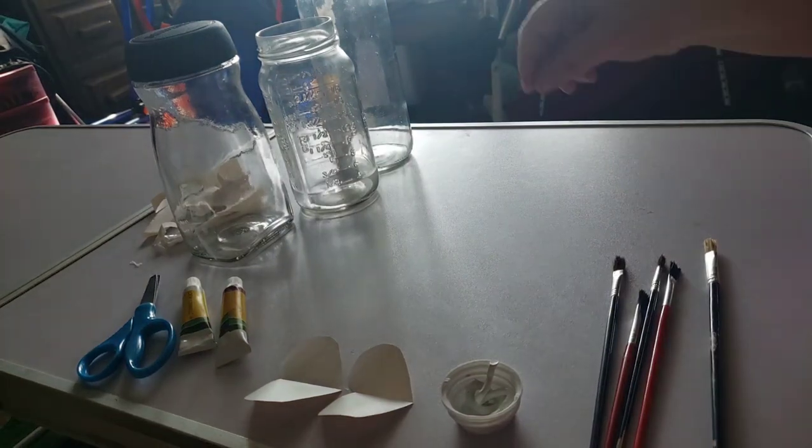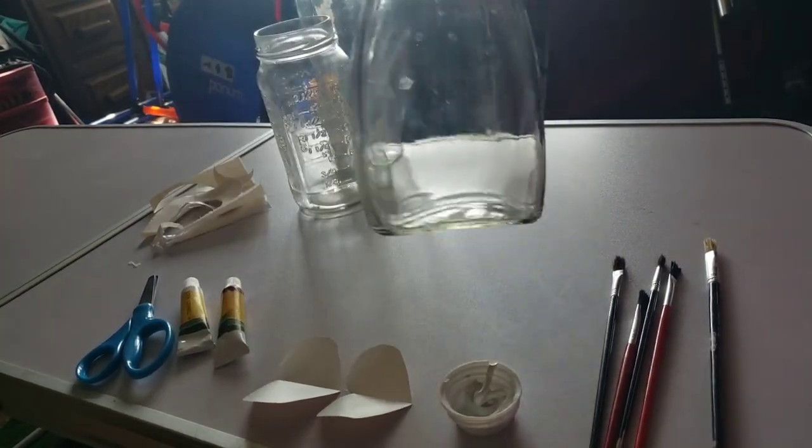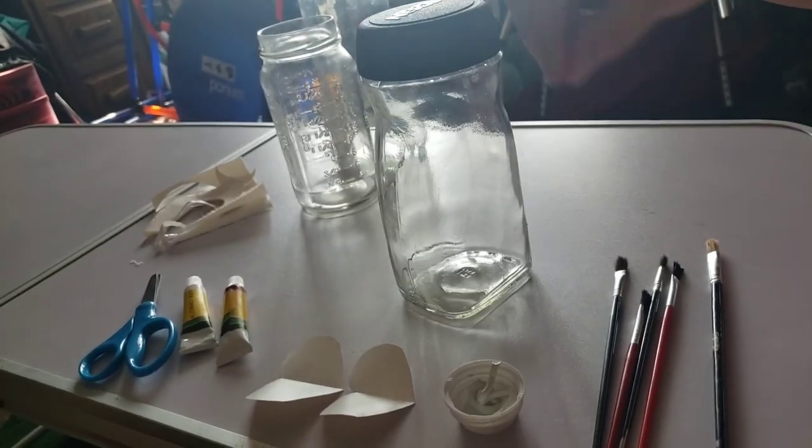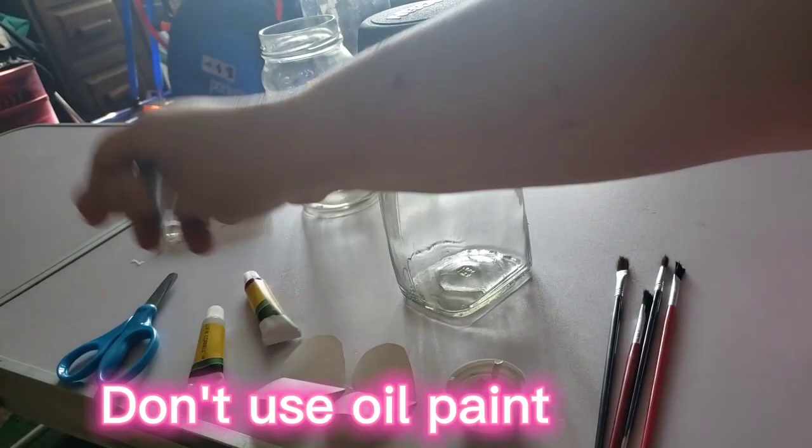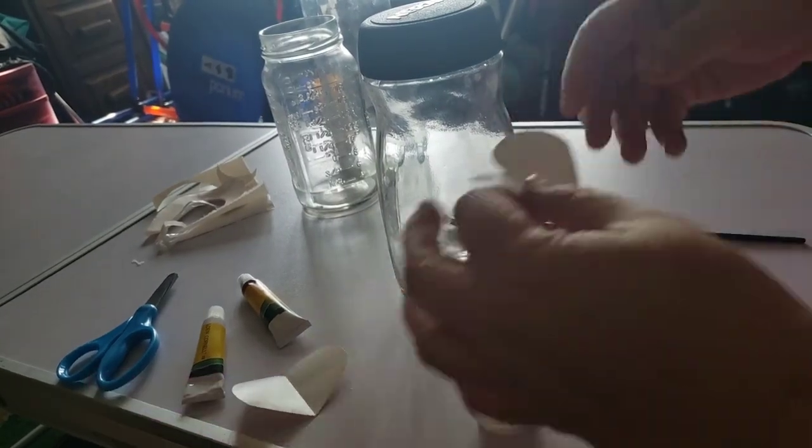Hi everybody, today we're gonna make a fun little project. I have some glass jars and this is not the right kind of paint but it's the paint that I got so we're using it. I used some contact paper and made hearts.